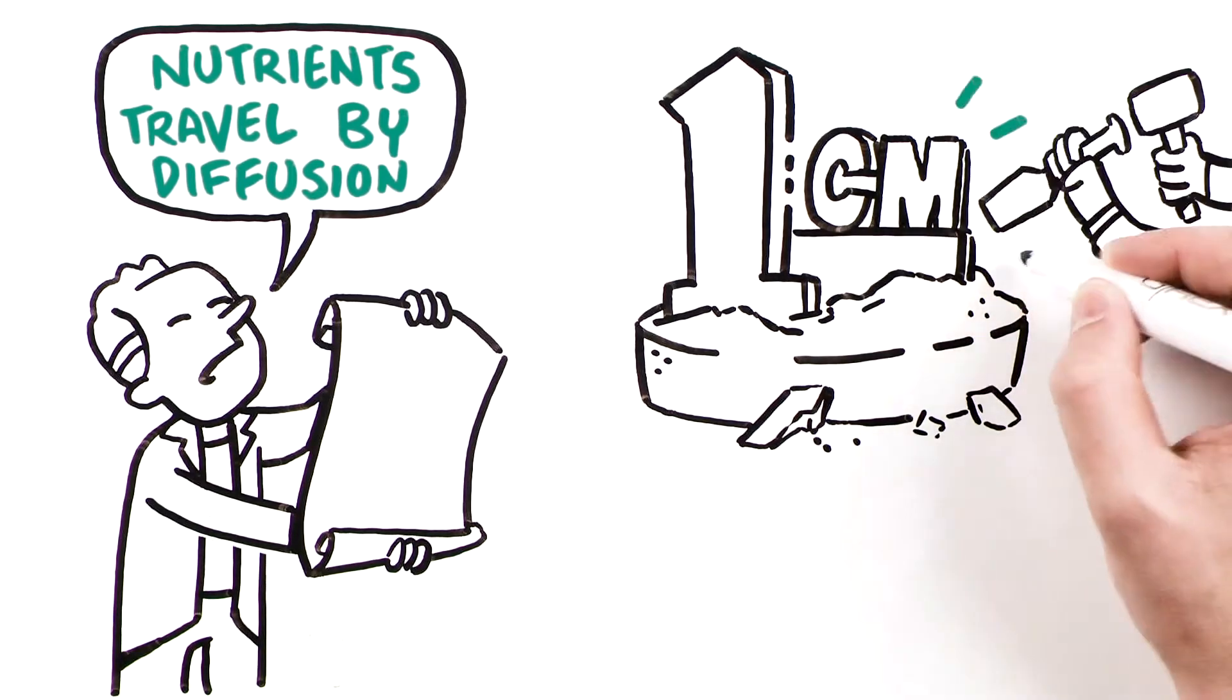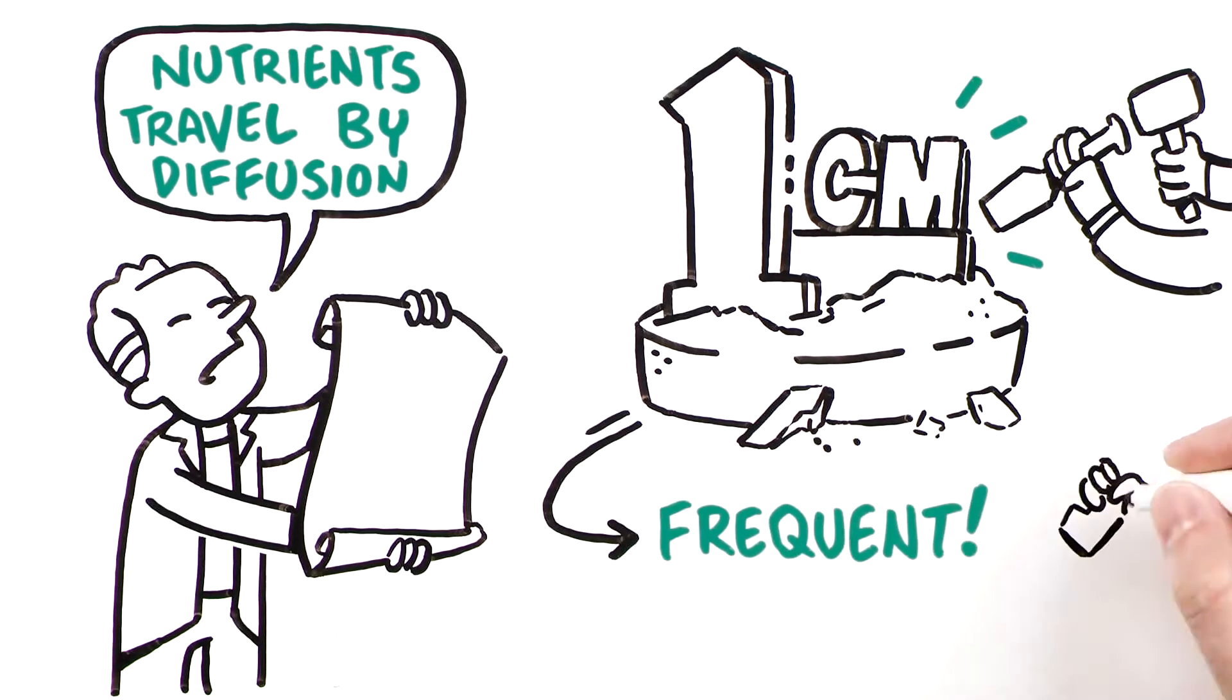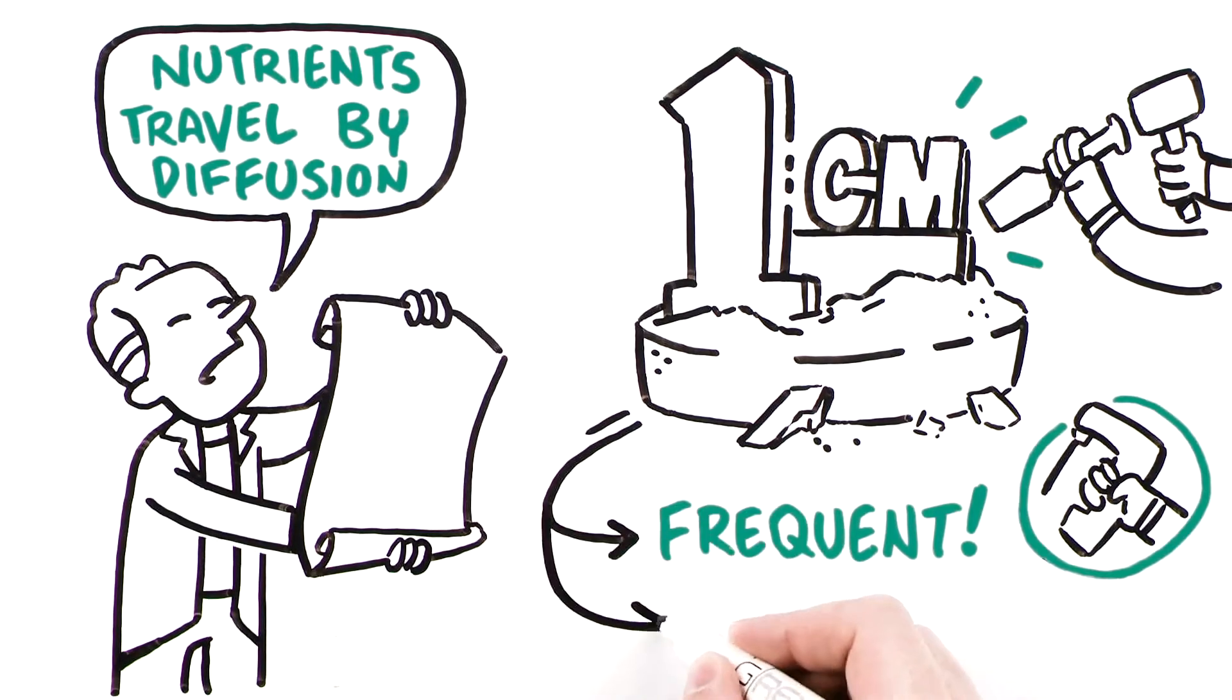The resultant one centimeter media height limit necessitates frequent interventions for feeding and results in a cell production process that is impractical for clinical manufacturing.